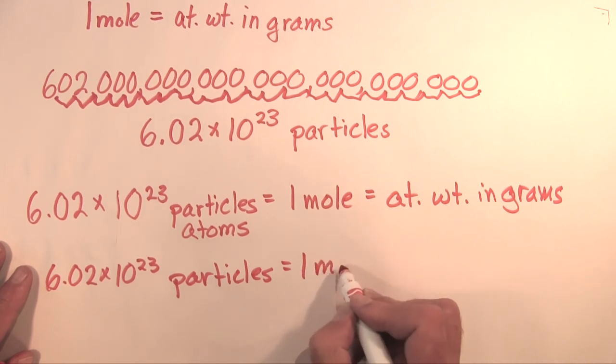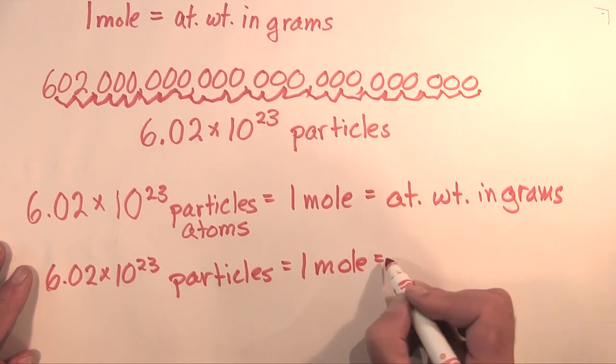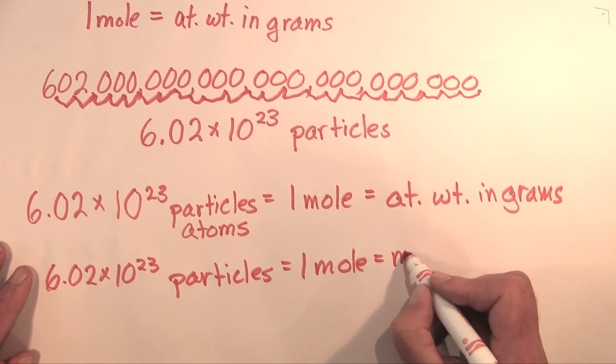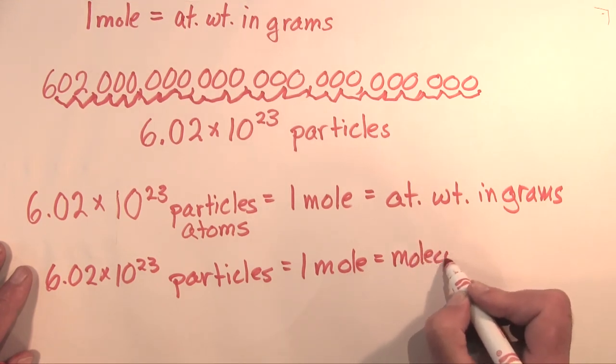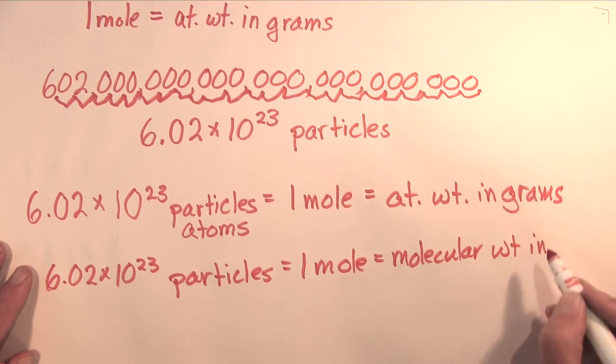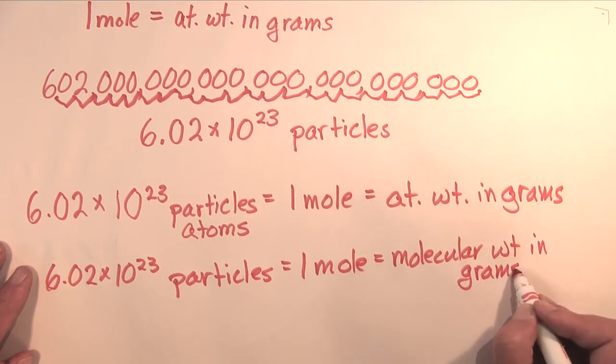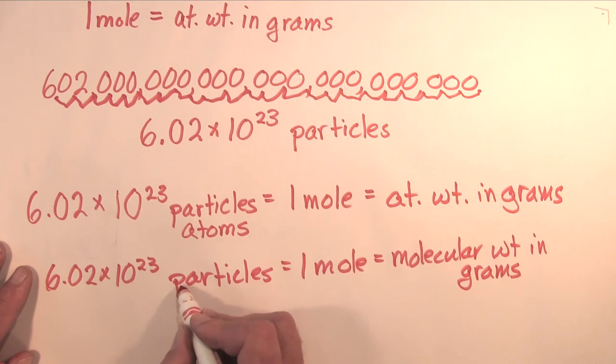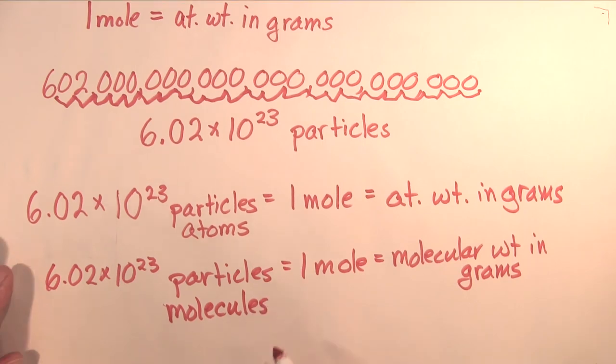6.02 times 10 to the 23rd particles equals one mole, and we also said that that was the molecular weight in grams. So what are the particles this time? The particles this time are molecules.